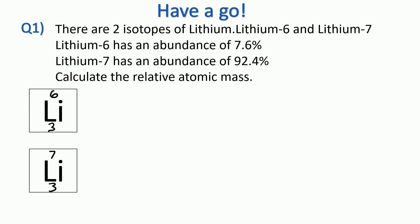Okay, so let's see how you got on. So first of all, we've got 7.6% of lithium-6 and we've got 92.4% of lithium-7. So then we do 7.6 divided by 100 times 6, because that's the mass number 6, and that comes to 0.456.